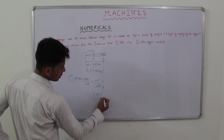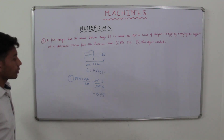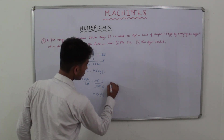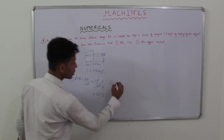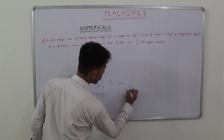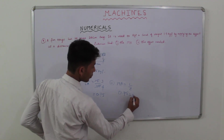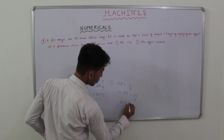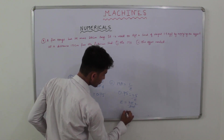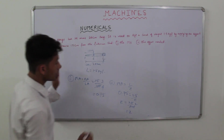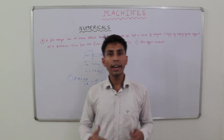Moving on to the second part: what is the effort needed? Using mechanical advantage = load / effort: 0.75 = 1.5 / effort, so effort = 1.5 / 0.75 = 2 kgf. Since the load was in kgf, the effort is also in kgf.